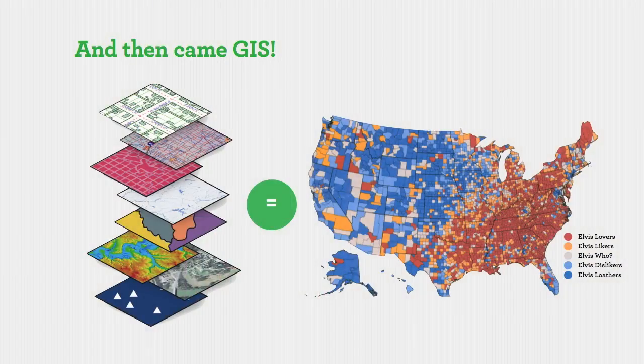With modern GIS, the ability to bring together different data layers is very easy. You can bring a lot of data together and make maps. The problem is that some of these maps are not very meaningful. Sometimes these maps are merely presenting data rather than actually representing the process.